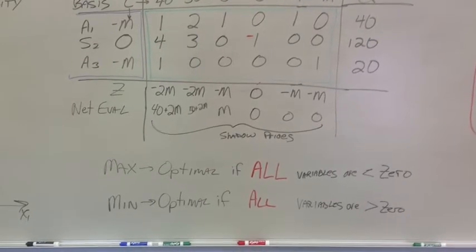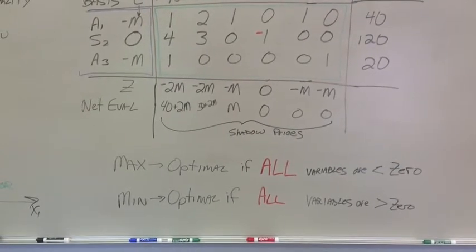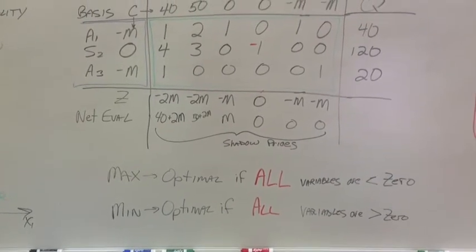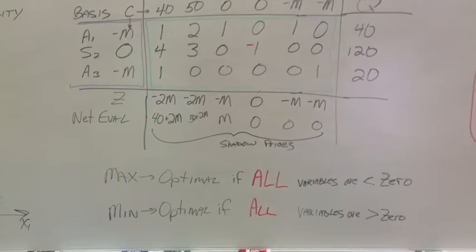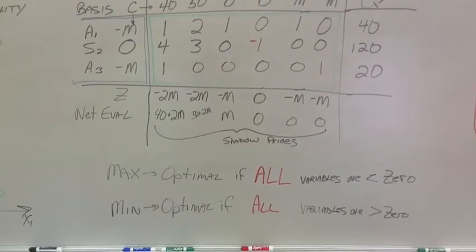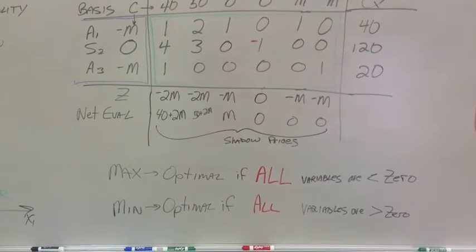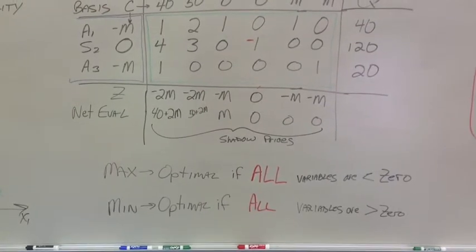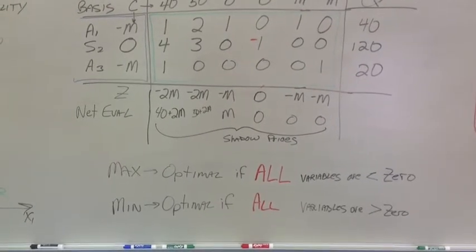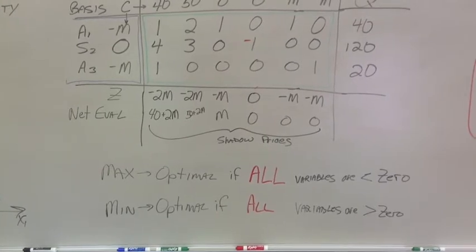In other words, we can't squeak any more cost out of any one of the variables. But again, this is a max problem, and for an optimal solution all the variables have to be less than zero. Our variables are greater than zero, so we do not have an optimal solution.